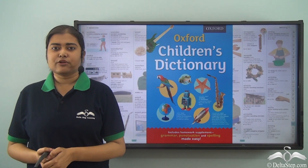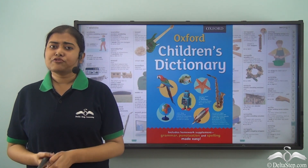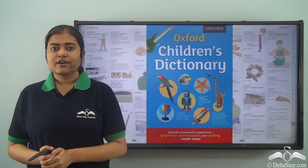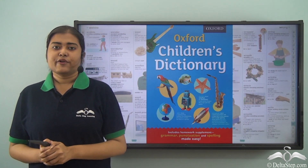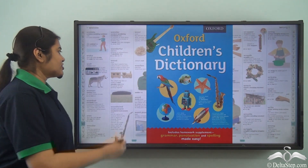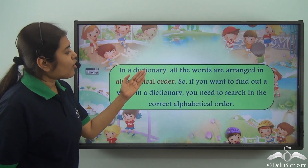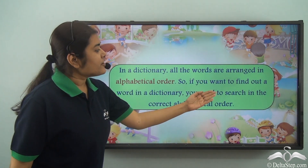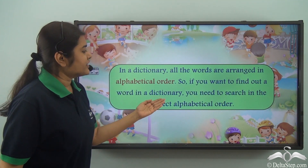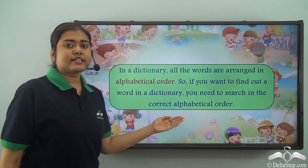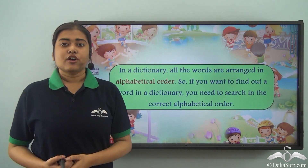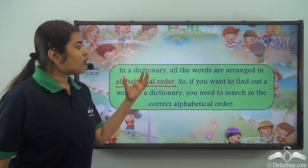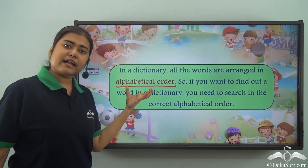A dictionary has thousands and thousands of words. So how do you find a particular word in the dictionary? It's a thick book with so many words. Well, there's a pattern. In a dictionary, all the words are arranged in alphabetical order. So if you want to find a word in a dictionary, you need to search in the correct alphabetical order. That pattern is the alphabetical order, and all the words follow this particular pattern.